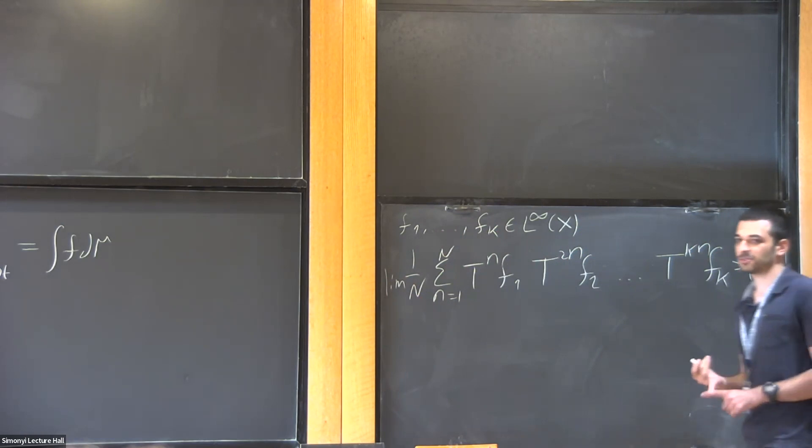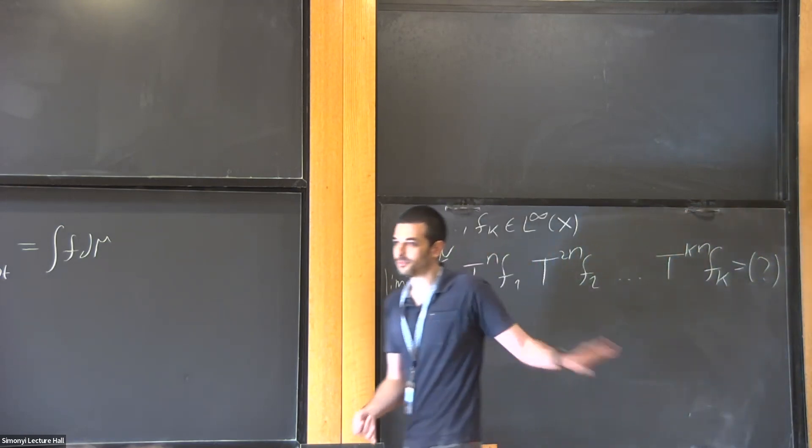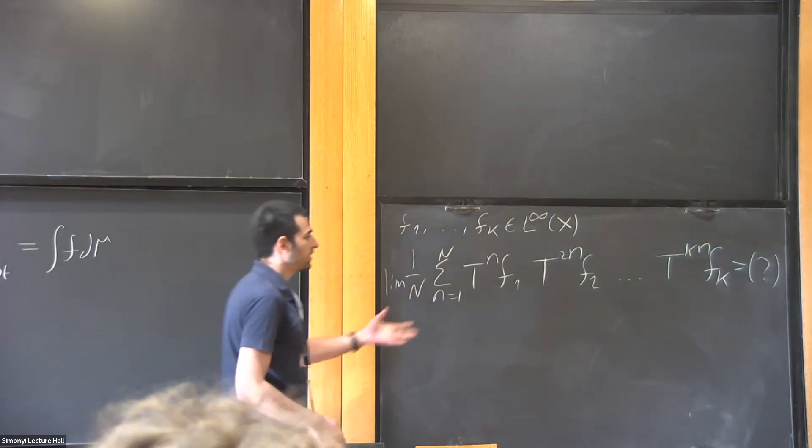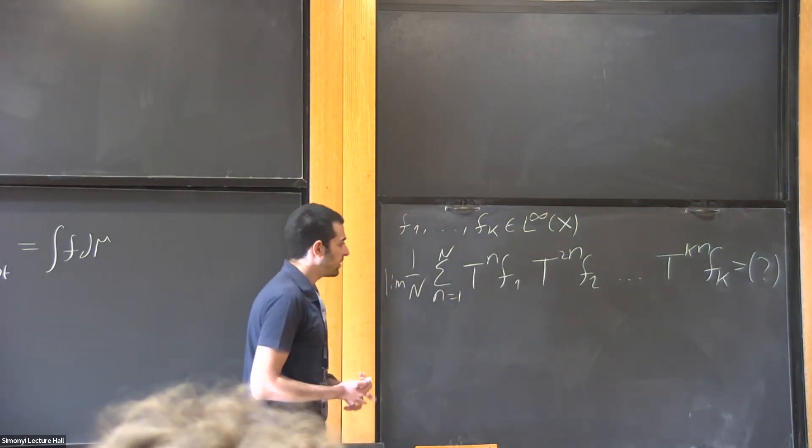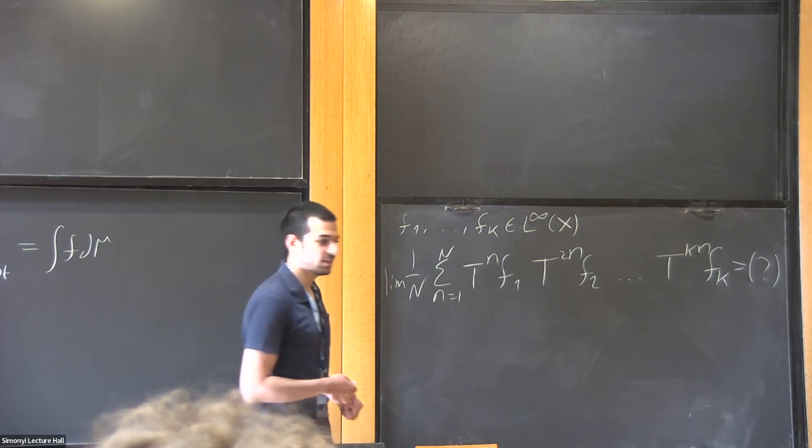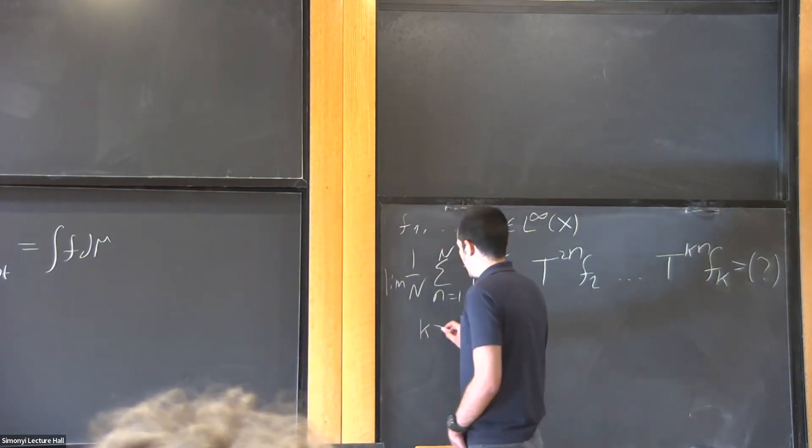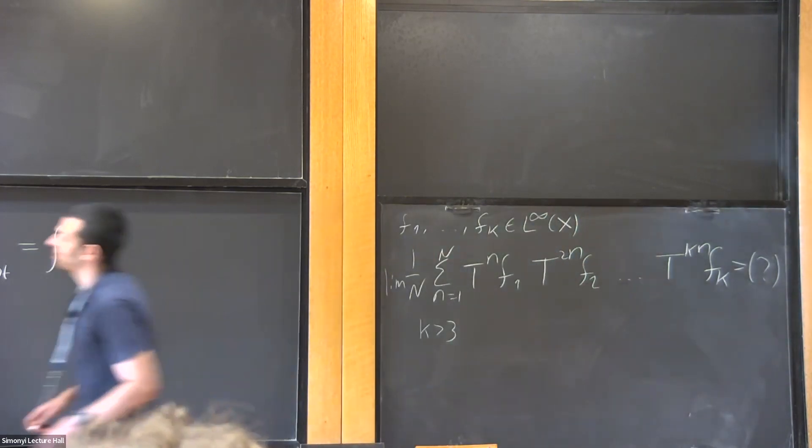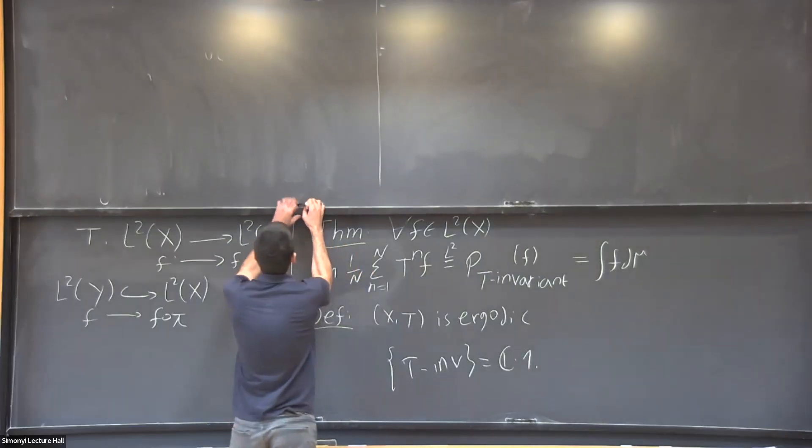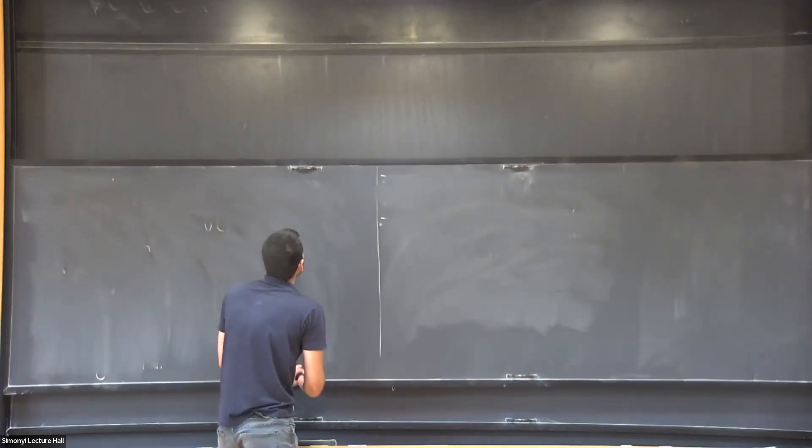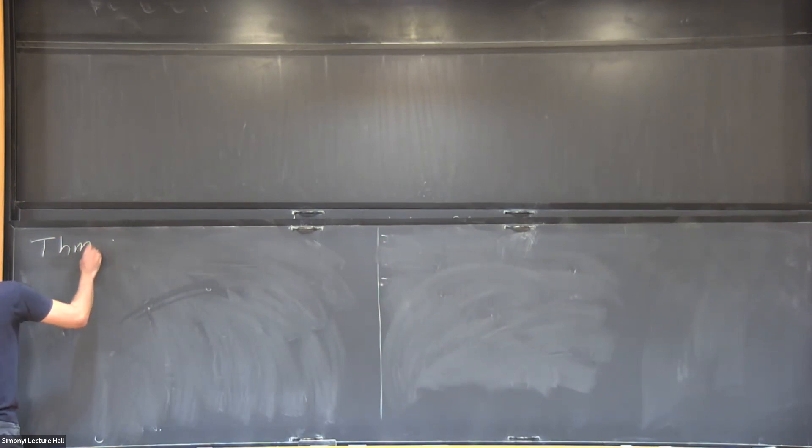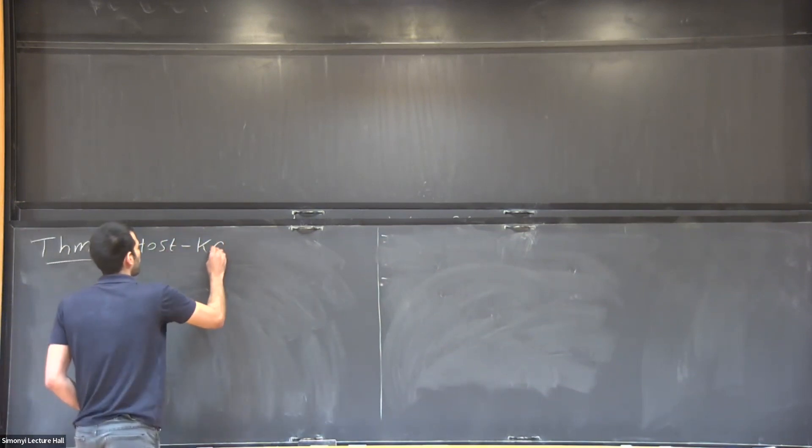So some history. When k equals 2, Furstenberg proved that it converges and also computed the limit. When k equals 3, it was work of Furstenberg and Weiss, and independently work of Conze and Lesigne. And for general k, let's say k greater than or equal to 3, this is work by Host-Kra, which was proved independently by Ziegler.